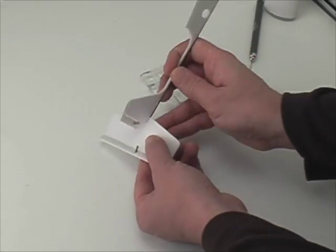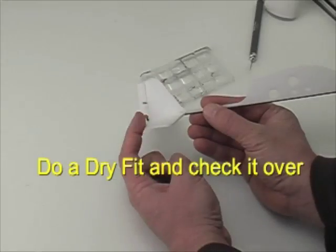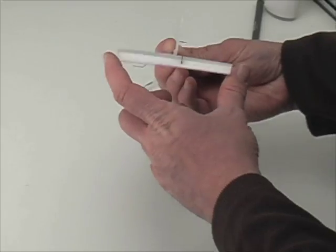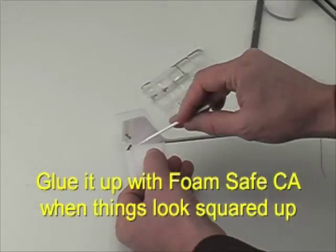The horizontal stabilizer and elevator can be dry fitted to the rear of the plane just like so, and you'll want to check to make sure it's nice and square, then apply CA glue and put it aside to dry.